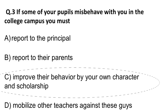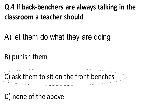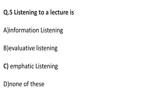Question four: If backbenchers are always talking in the classroom, a teacher should — options are: A) let them do what they are doing, B) punish them, C) ask them to sit on the front bench, D) none of the above. In teaching aptitude questions, you must find the best possible option. Most students don't talk when seated on the front bench, so the correct answer is C: ask them to sit on the front bench.